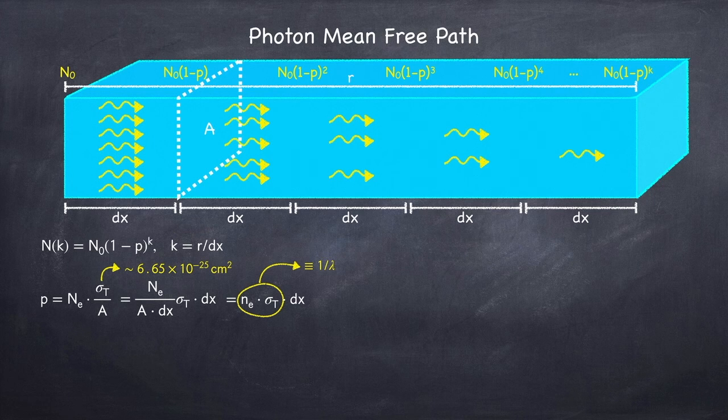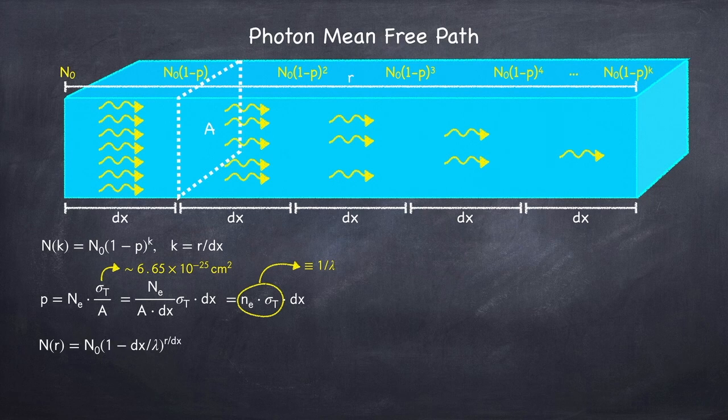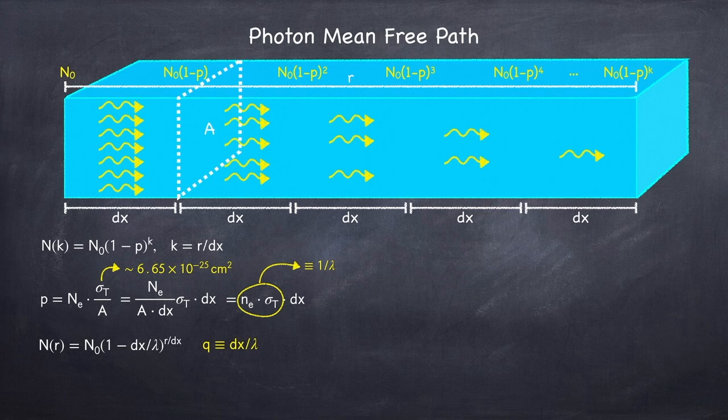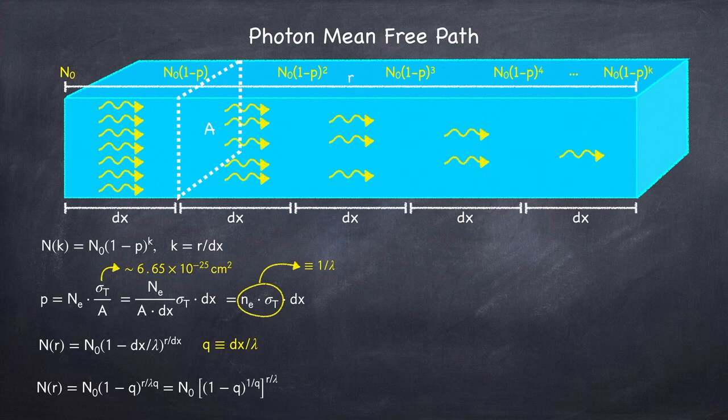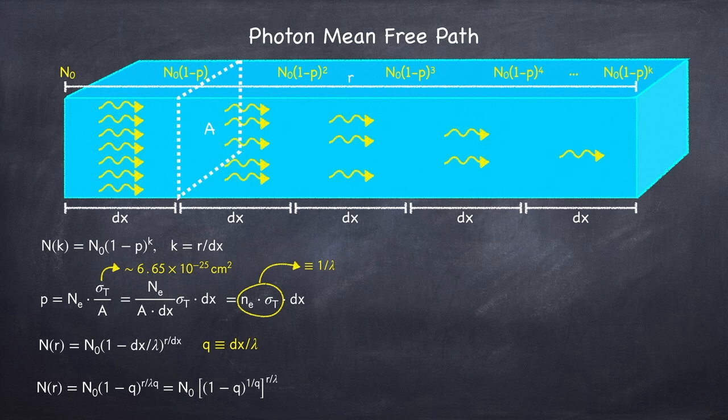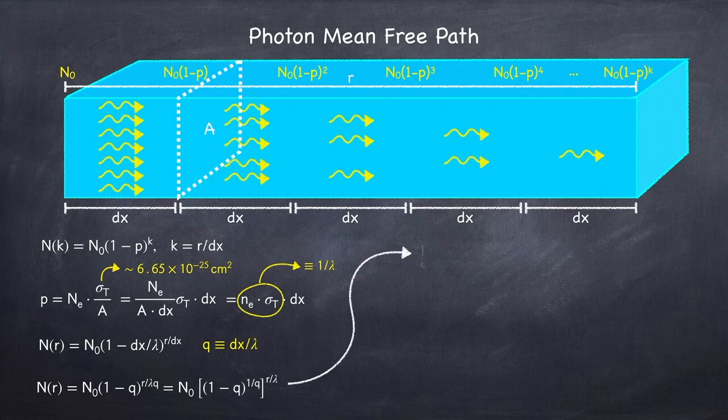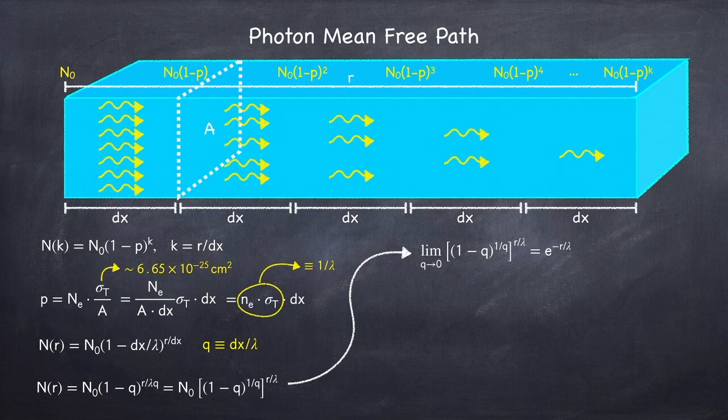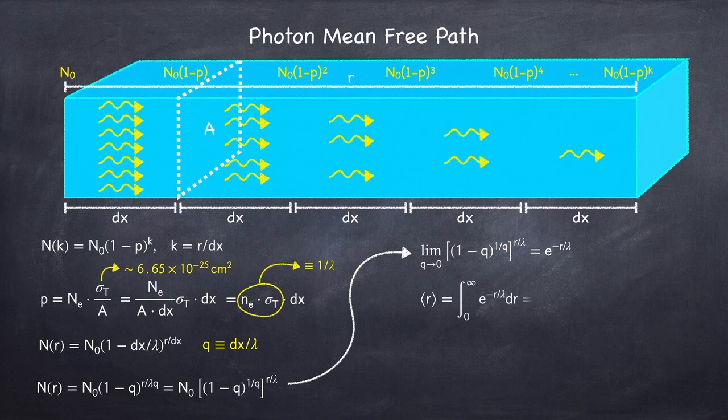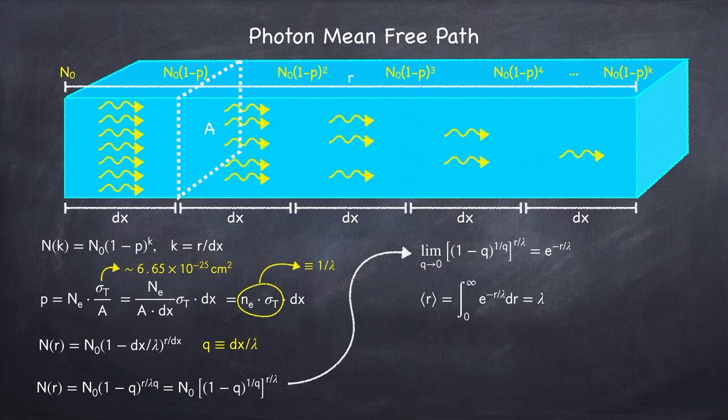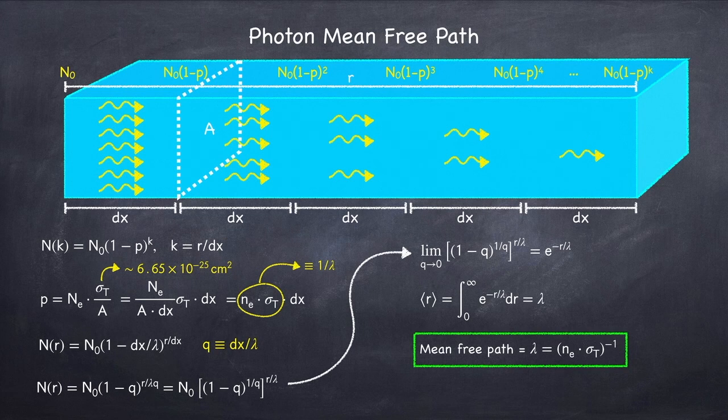Now that we have an expression for p, I'm also going to replace k with r over dx to get the number of photons remaining as a function of distance. I'm now going to define the quantity q as dx divided by lambda. This gives me the following expression for n of r. Now what we want to do is take the limit as this step size dx goes to 0. This corresponds to taking the limit as q goes to 0. The limit of this quantity inside of the brackets is simply the definition of 1 over e. So this bracket raised to the r over lambda is simply e to the negative r over lambda. If we integrate this over r from 0 to infinity, we find that the average distance a photon will travel is lambda. And so we have just found that the photon mean free path is 1 over the electron density times the Thomson cross-section.